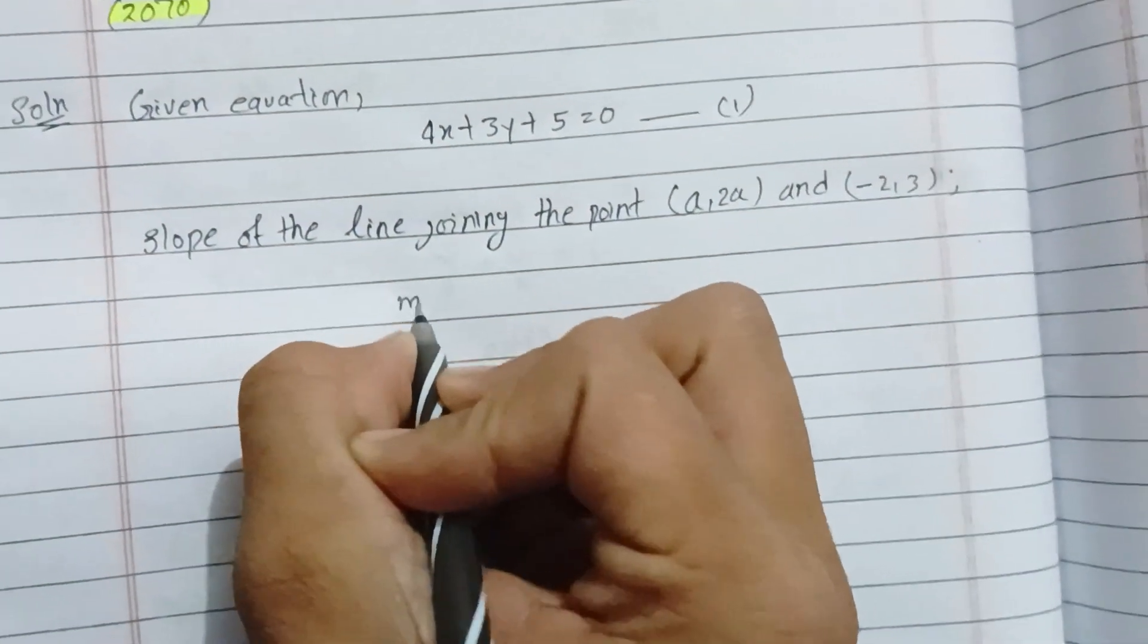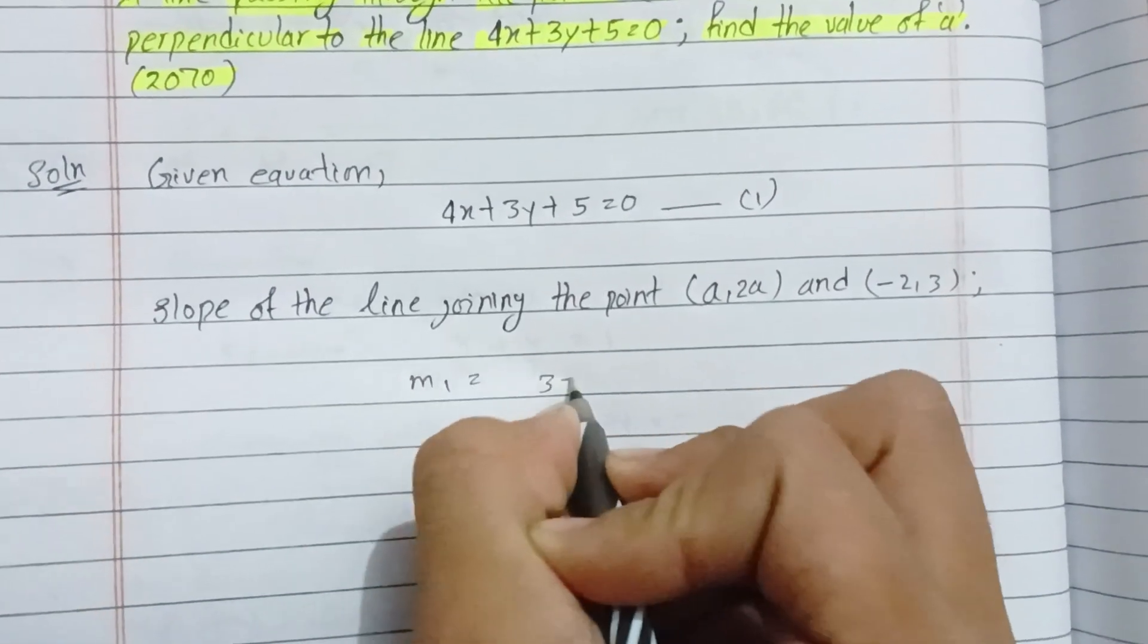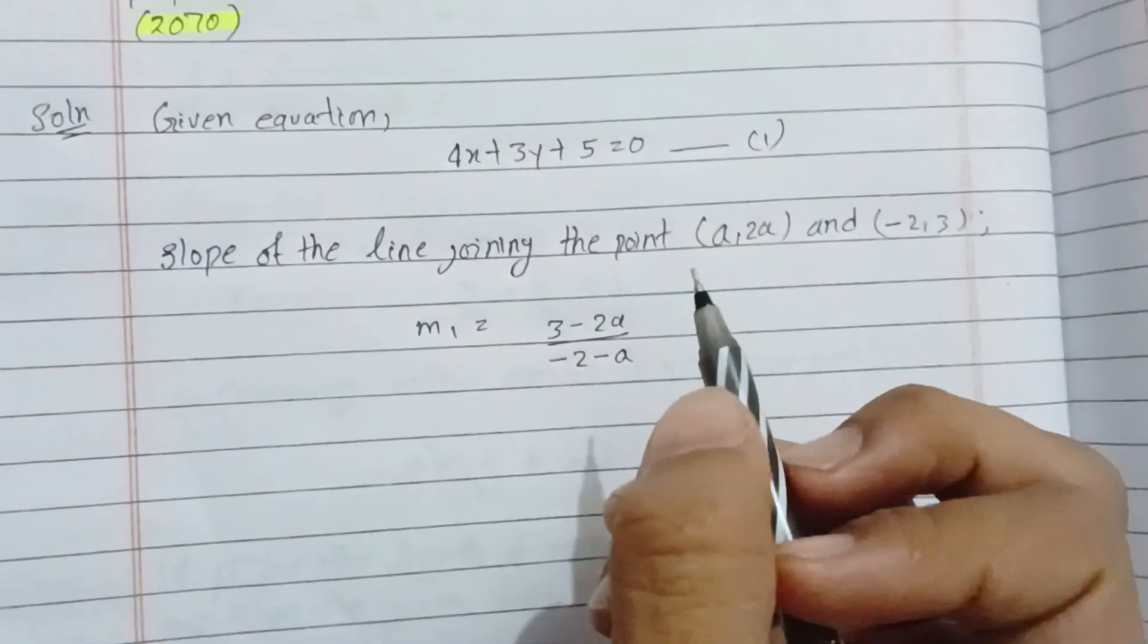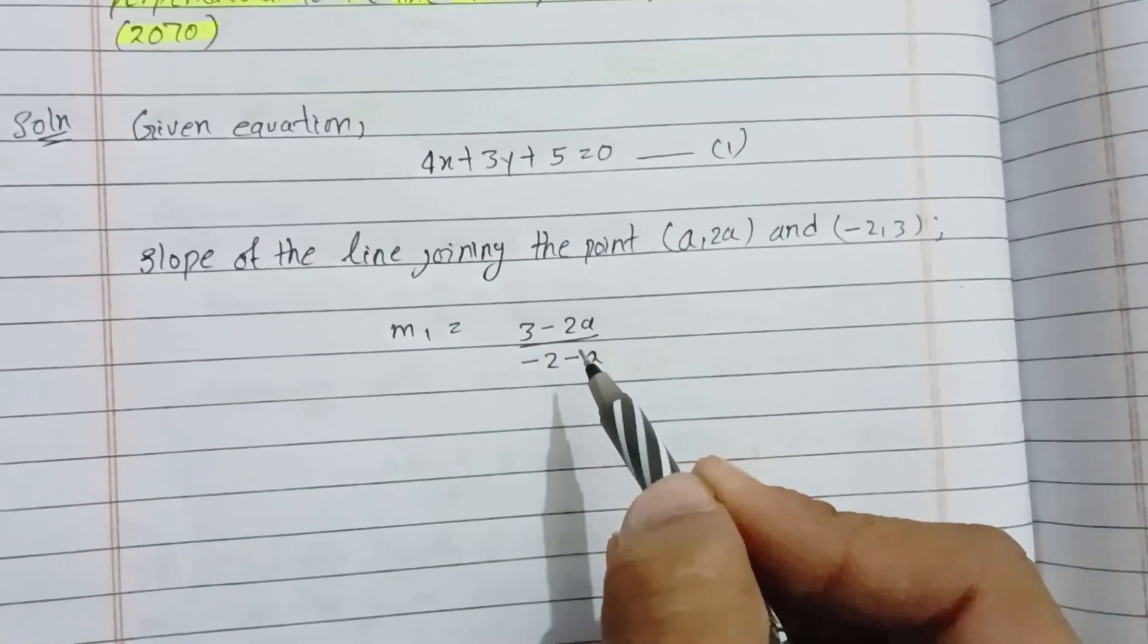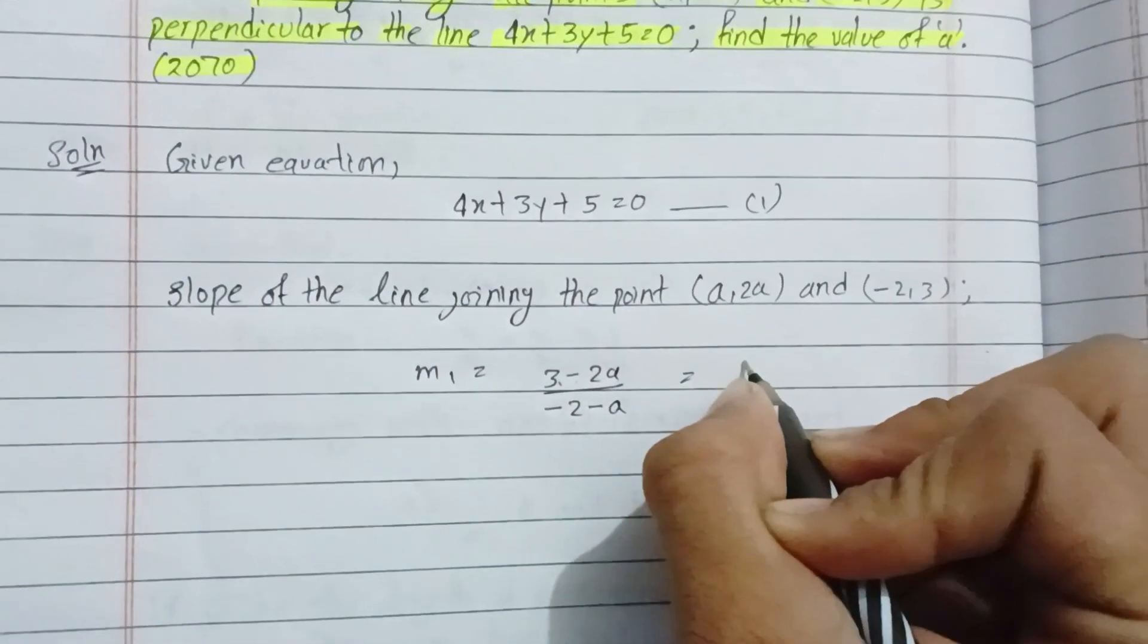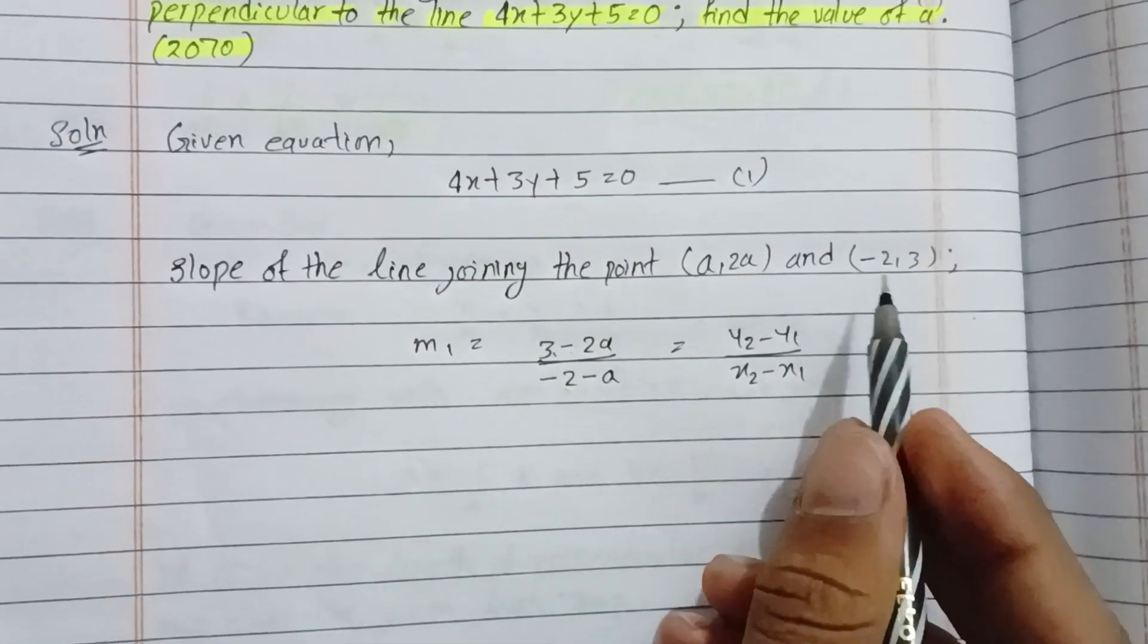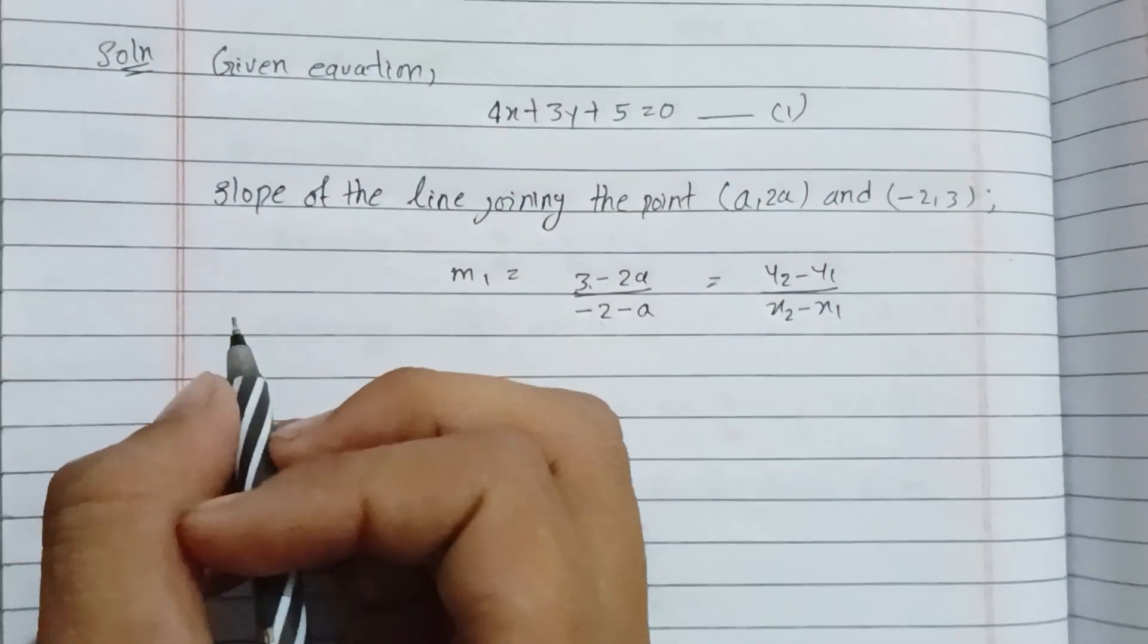So m1 equals (y2 - y1) over (x2 - x1). That gives us (3 - 2a) over (-2 - a). The slope formula is (y2 - y1) over (x2 - x1), where y2 is 3, y1 is 2a, x2 is -2, and x1 is a. So this is the slope of our line.